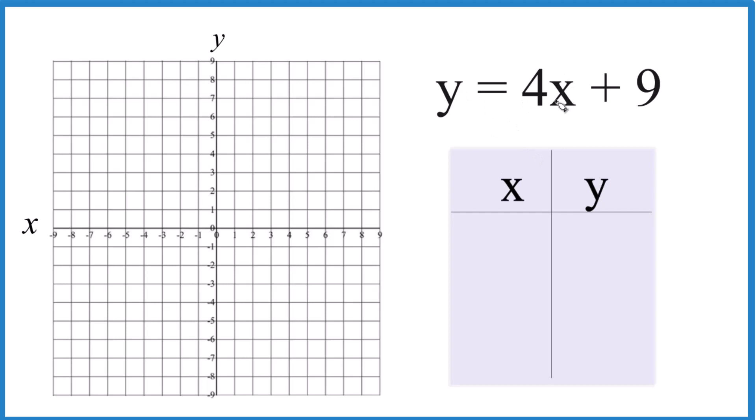So we're going to put values in for x, find values for y, then we're going to graph them. Let's start with 0. I always like to start with 0 because 4 times 0, that's just 0. So 0 plus 9, that gives us 9, which is kind of at the edge of our graph, but that's okay.